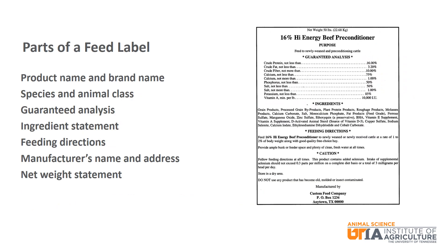All pre-mixed feeds or individual feedstuffs will have a feed label that provides specific information about the given feed. The main parts of a feed label include the product name and brand name, the species and animal class that the feed is designed for, the guaranteed analysis, the ingredient statement, any feeding directions, the manufacturer's name and address, as well as a net weight statement.